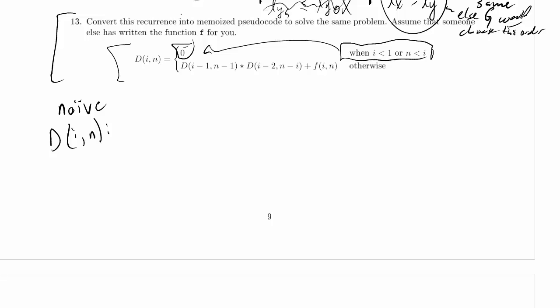And there are no recursive calls, so it's a base case. So if i is less than 1 or n is less than i, then I just want to return 0.